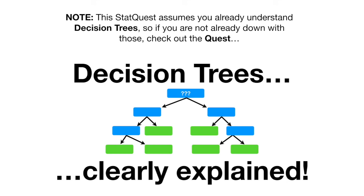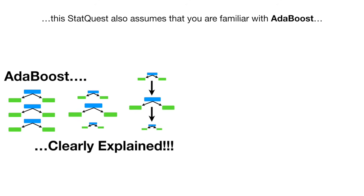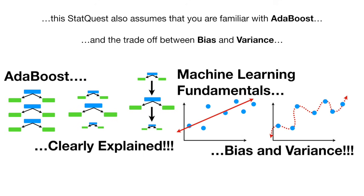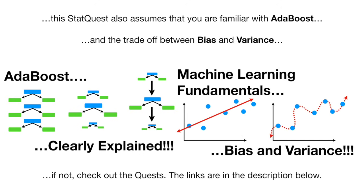Note: this StatQuest assumes you already understand decision trees, so if you're not already down with those, check out the Quest. This StatQuest also assumes that you are familiar with Adaboost and the trade-off between bias and variance. If not, check out the Quests. The links are in the description below.